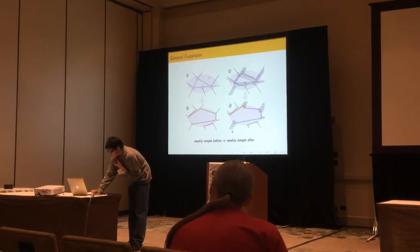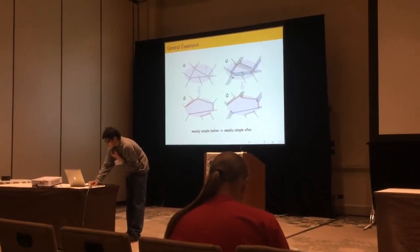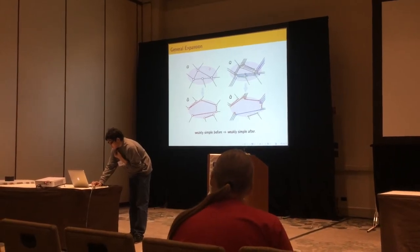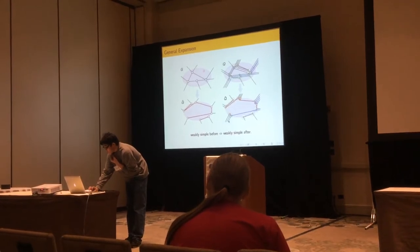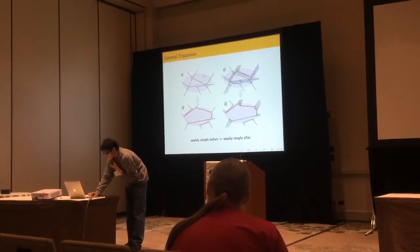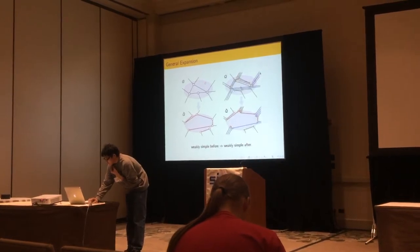For example, see this blue path, it enters this region and leaves this region, and we just straighten it as one straight edge. And similarly for the green path, and even for a spur.